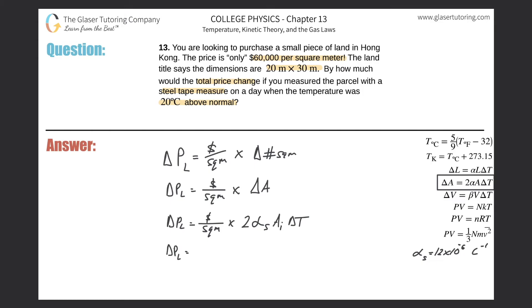So the price per square meter is $60,000 times 2, multiplied by that alpha of 12 times 10 to the minus 6, times the initial area which is 20 by 30, times the change in temperature of 20 degrees above normal.